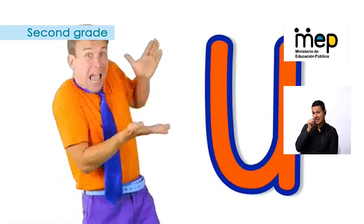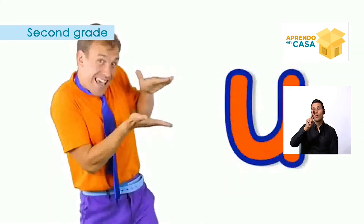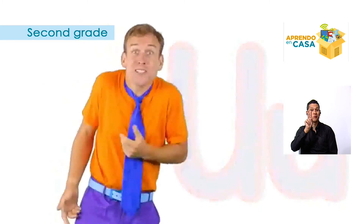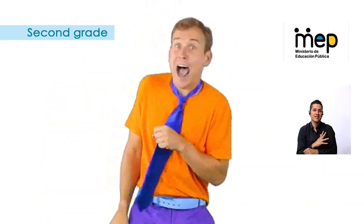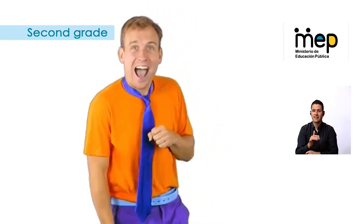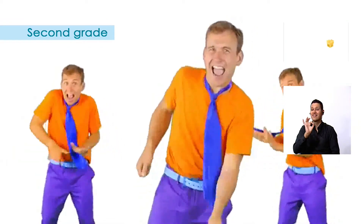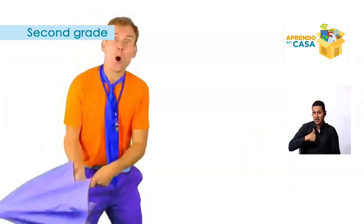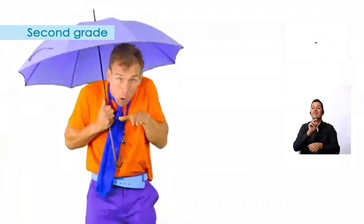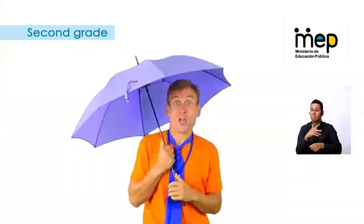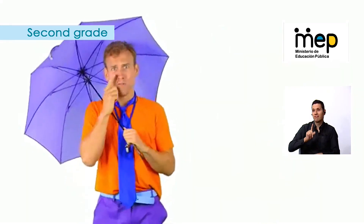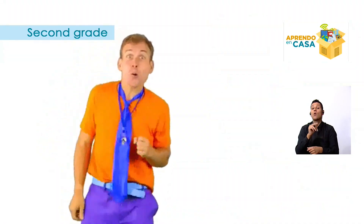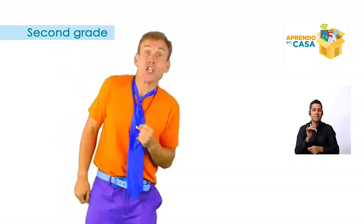This is a capital U. This is a lowercase u. Now let's make the letter U sound. U is for uncle. U is for umbrella. U is for underneath. U is for up. U is for upset. U is for umpire. Now you know some U words!